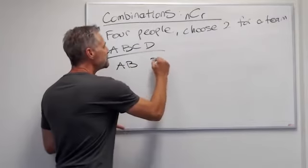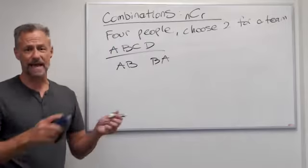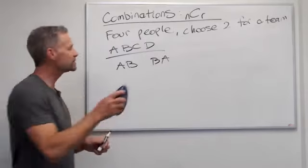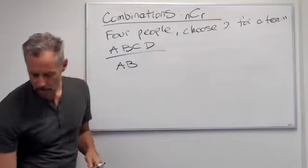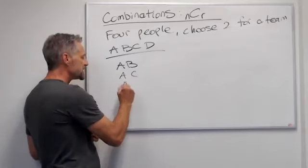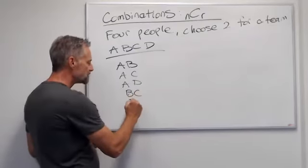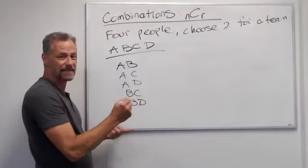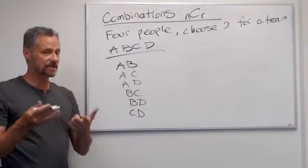Notice I'm not going to list B and A. That would be the exact same team. So that's what we're saying. A and B and B and A, order doesn't matter. They're both the same team. So I only list it once. So A can be with B, A can be with C, or A can be with D. B can be with C or B can be with D. And then C can be with D. So there's only six possible different combinations.